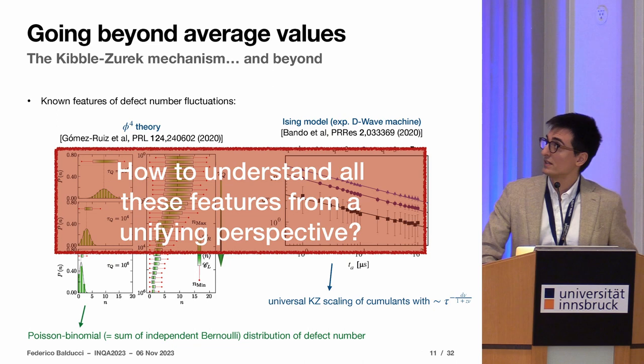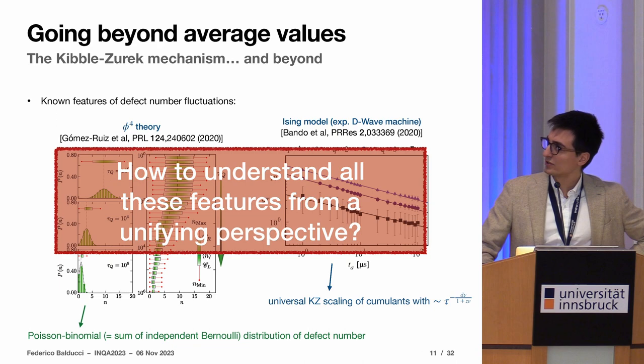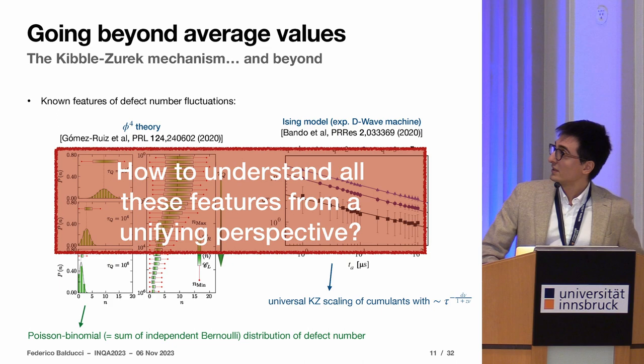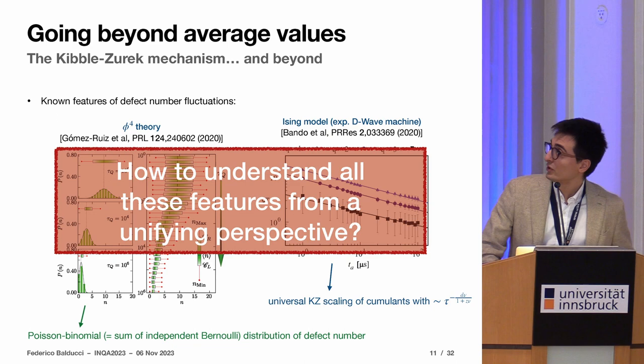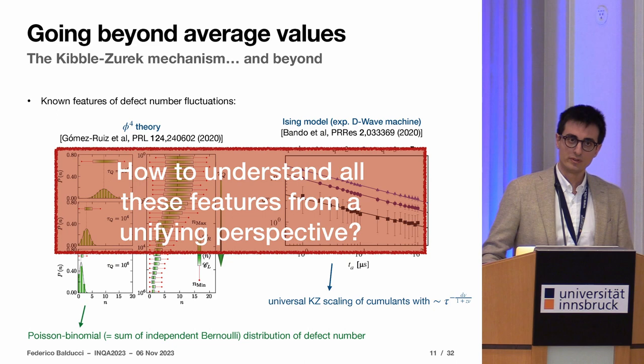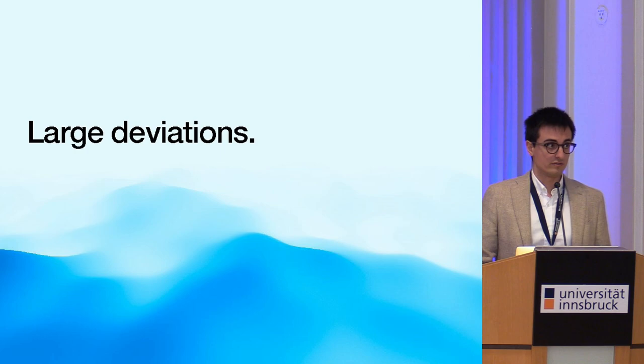What has been done so far? There have been both theoretical and experimental studies. You see a sort of Monte Carlo phi-fourth theory, and you see that actually the probability distribution of the number of defects changes with the annealing time. What was found is that this probability distribution is quite consistent with what is called Poisson binomial, which is basically the distribution of the sum of independent Bernoulli variables. From experimental data you see there is a very good agreement with the same prediction. But can one say more? Can one understand all this feature from a unified perspective? What is the reason behind this Poisson binomial distribution?